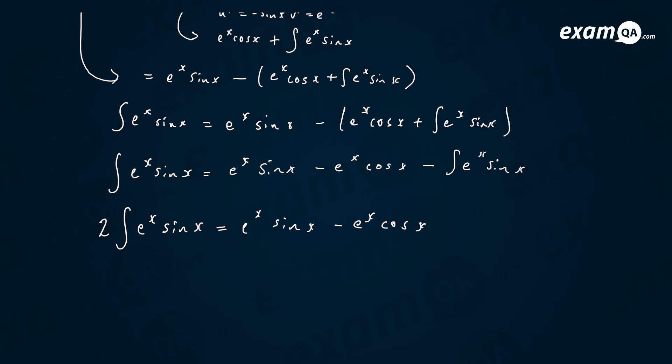And finally, what was the question? Work out the integral of this, right? So, just divide yourselves by 2. 2 equals a half. e to the x sine x minus e to the x cos x. There you have it. That is the answer.